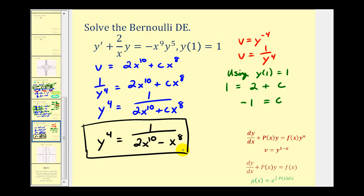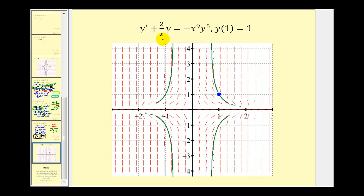To get a visual for this, let's take a look at a graph. The given differential equation can be used to create the red slope field, and because we're given y of 1 equals 1, we know our particular solution must contain that point. Graphing our particular solution gives the green curve, which fits the slope field nicely and passes through the point corresponding to our initial condition. I hope you found this helpful. Thank you for watching.